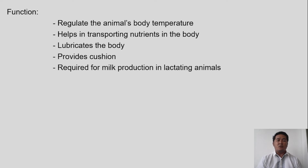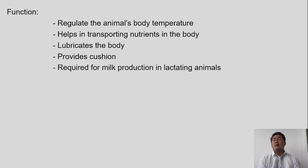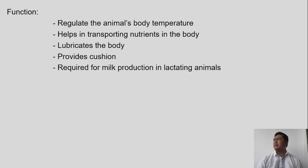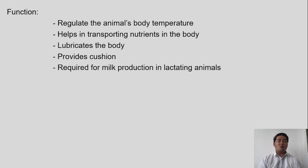During summer time, animals need water to regulate body temperature. Water also helps in transporting nutrients in the body. The circulatory system handles the transportation of nutrients, and blood — which is composed largely of water — is used to transport nutrients to every part of the body. Next, water lubricates the body; without water, the joints and bones would rub against each other causing damage.